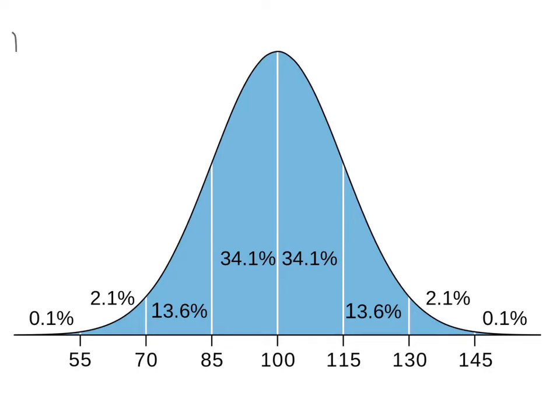A bell curve or normal curve describes the distribution of a set of data that creates a bell shape. It's usually used in statistics, and in psychology you'll use it to examine a set of data that you have gathered.